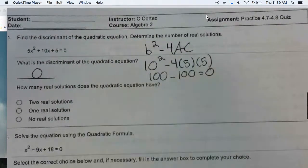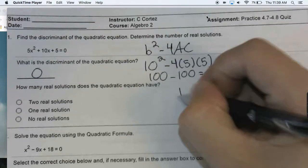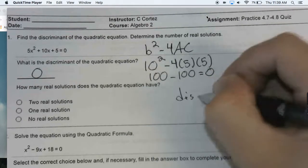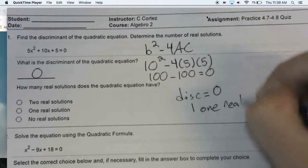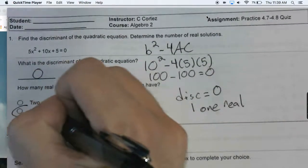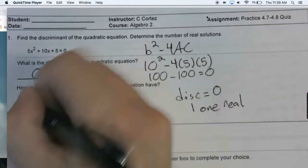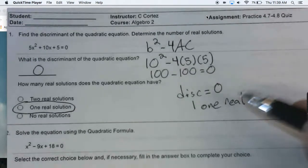Since this is a discriminant that's equal to 0, we can say that there's only one real solution. This is mentioned in the outline. Anytime the discriminant is equal to 0, there's only one solution.